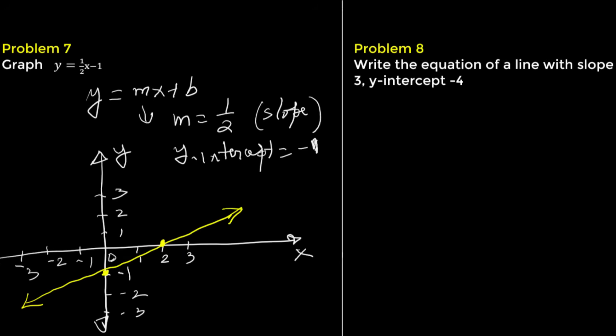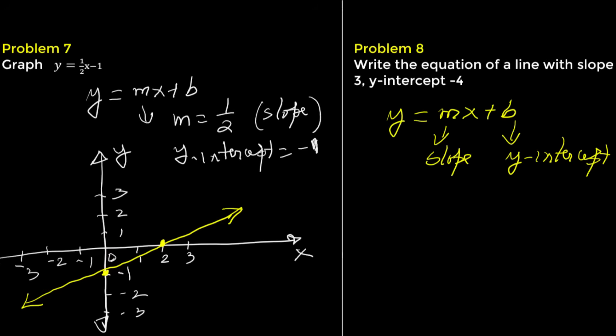Problem 8. Write the equation of a line with slope 3 and y-intercept negative 4. Using the slope-intercept form y equals mx plus b, the equation is y equals 3x minus 4.